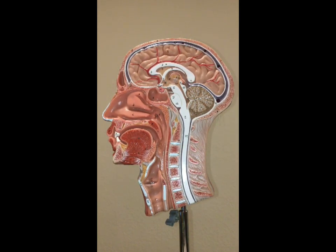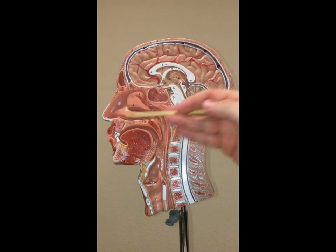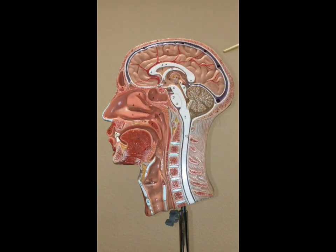Hello anatomy students. Today we'll be looking at the mid-sagittal cut head model, or the half head model, and looking at all the structures as they pertain to the nervous system. Here we have the anterior side with the nose, nasal cavity, and mouth, and the posterior side with the occipital bone and cerebellum.